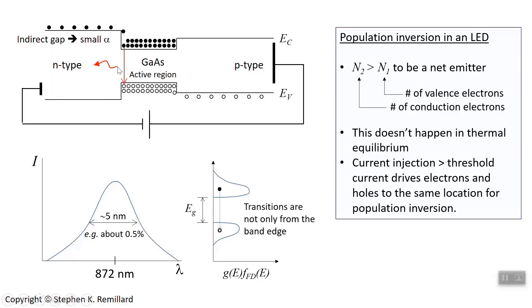So in this particular structure, population inversion is achieved by current injection. The voltage is hooked up, connected, and then the holes are pushed to the left and the electrons are pushed to the right. Current is driven through this tri-layer structure. That current affects the filling up of the quantum wells. And so injection current is the mechanism by which population inversion is achieved.